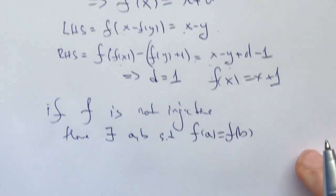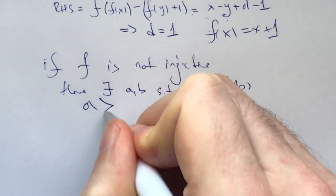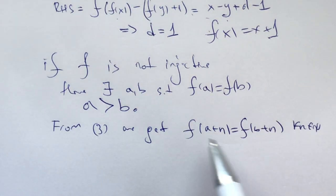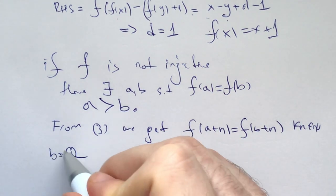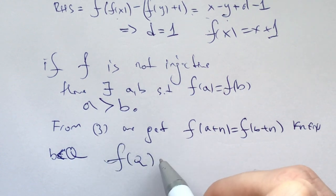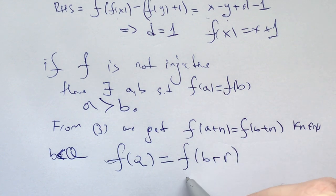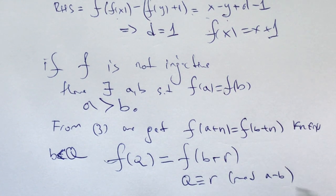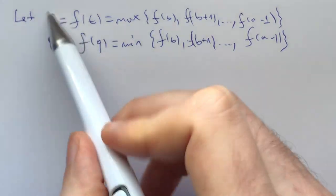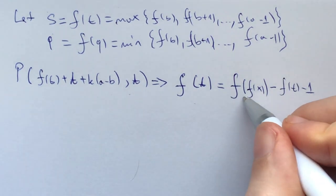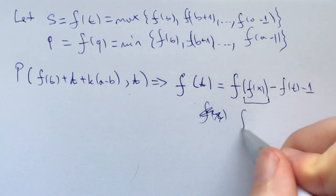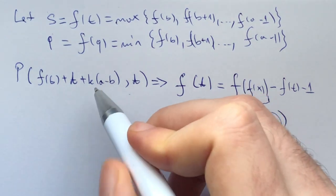This implies f is linear: f of x equals x plus d. Plugging into the original gives left-hand side x minus y and right-hand side x minus y plus d minus 1, which implies d equals 1, giving the solution f of x equals x plus 1. We move to the second case: if f is not injective, there exist a and b with f of a equals f of b where a is greater than b. From equation 3, f of a plus n equals f of b plus n for all natural numbers n, making the function periodic starting from some point.